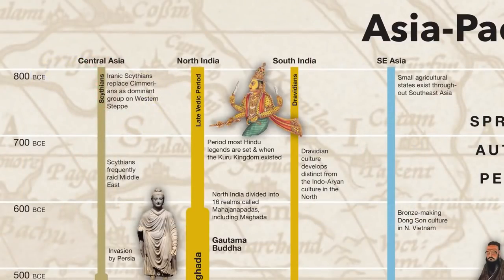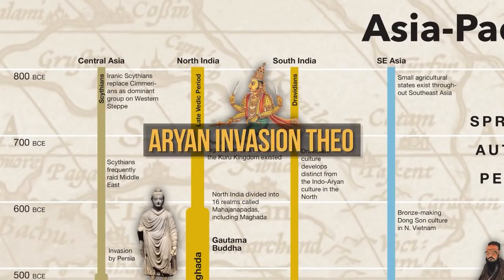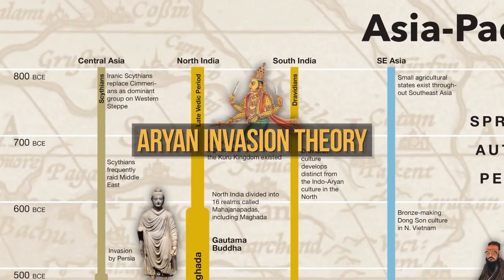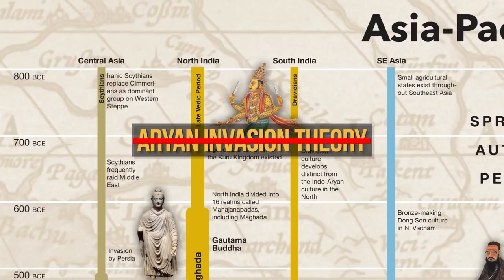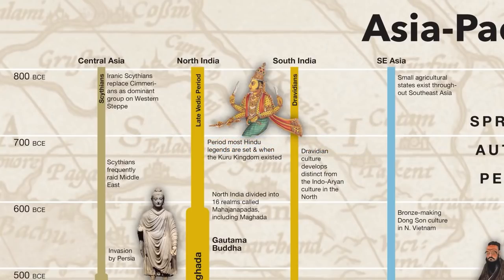And this is where things get controversial. During the 19th century, a theory developed called the Aryan invasion theory, which posited that Vedic culture was the result of fair-skinned invaders called Aryans conquering indigenous Indians and introducing so-called advanced culture. These Aryans were also said to be the ancestors of Northern Europeans, which is why the British colonizers of India were so keen on the theory, and why the Nazis later picked up the word Aryan and used it to push their racist ideology.